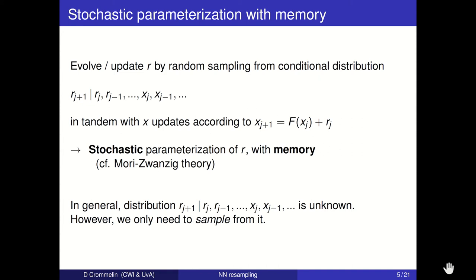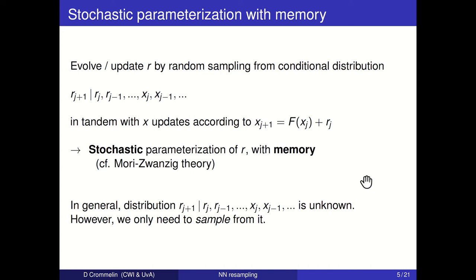The focus is on updating r by random sampling from a conditional distribution: given the current state and history of both r and x, we have a distribution for r at the next time step and we sample from that. We do this in tandem with the time stepping of x. By randomly sampling from this conditional distribution, we're effectively doing a stochastic parameterization of r with memory — there's history dependence, and it's a stochastic update rather than taking the average.